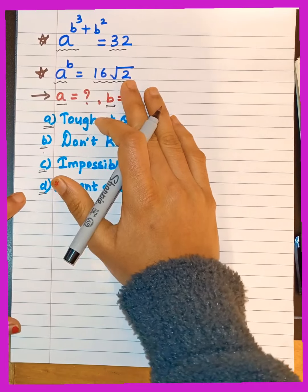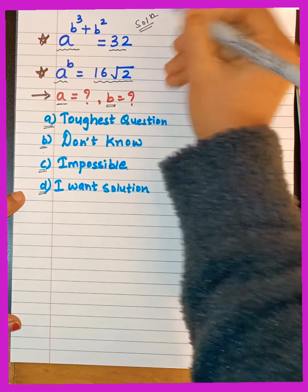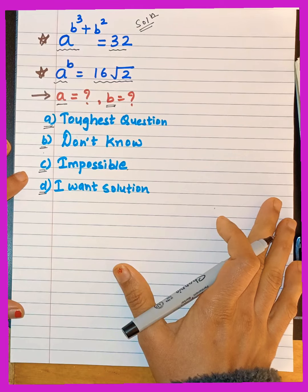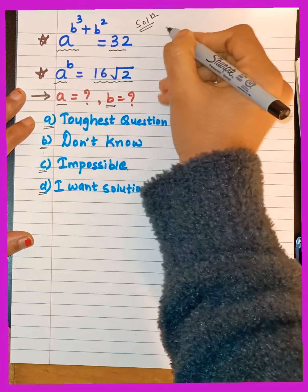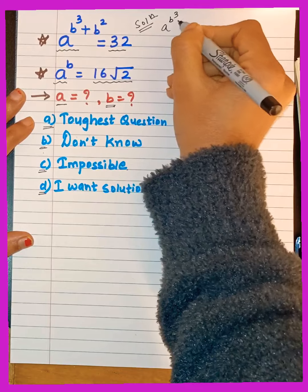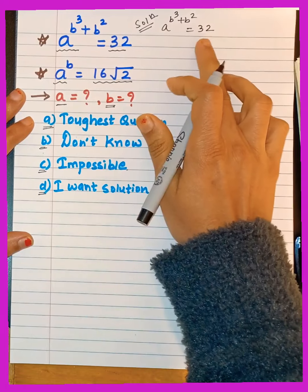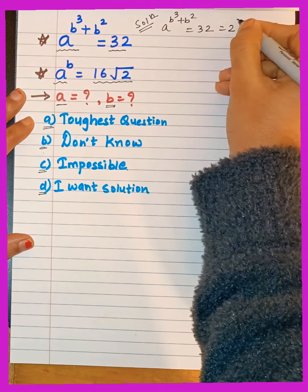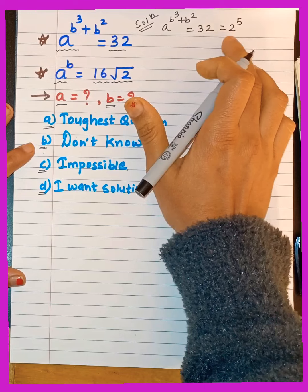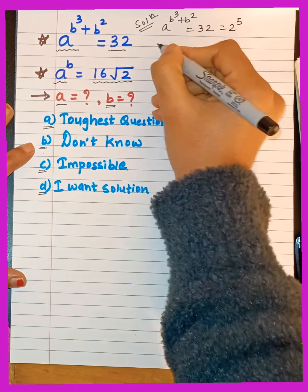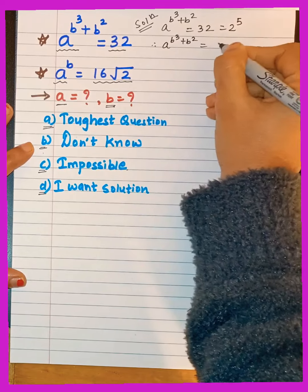Let's move ahead with the solution. First equation is: a raised to (b cubed + b squared) equals 32. In place of 32, I can write 2 raised to 5, because 32 means 2 multiplied 5 times. So I get: a raised to (b cubed + b squared) equals 2 raised to 5. This is our first equation.